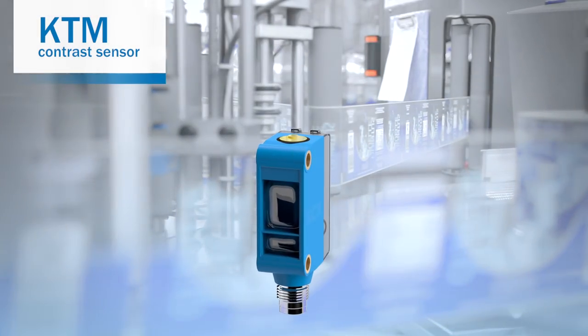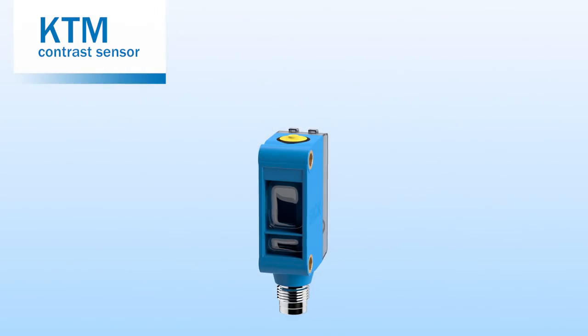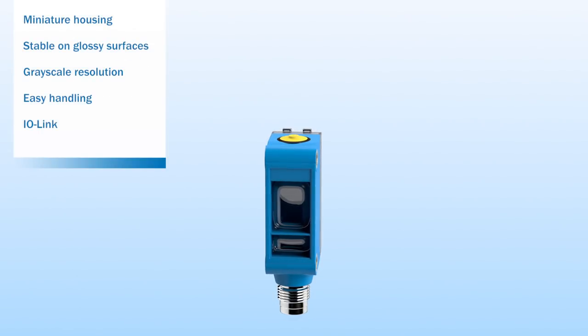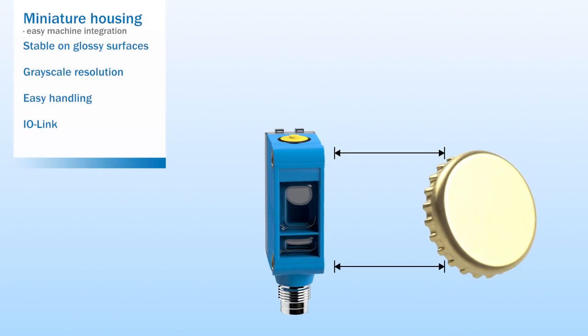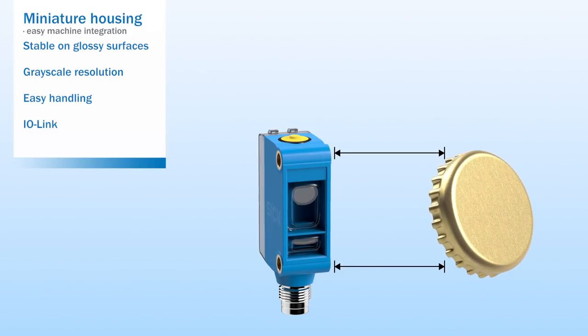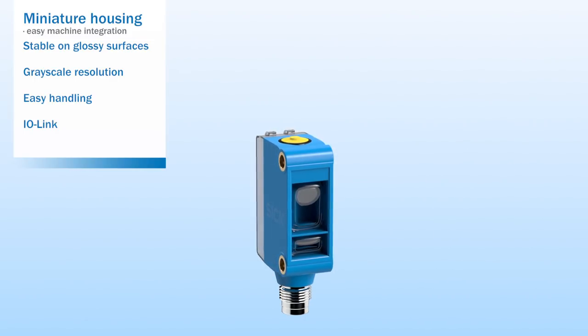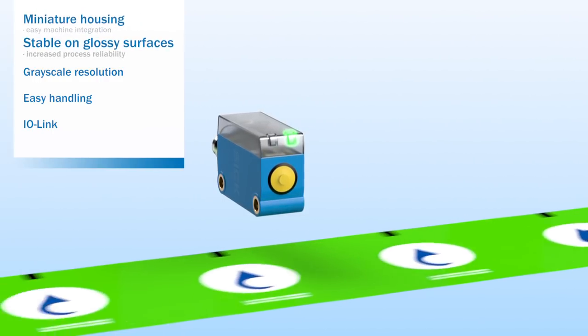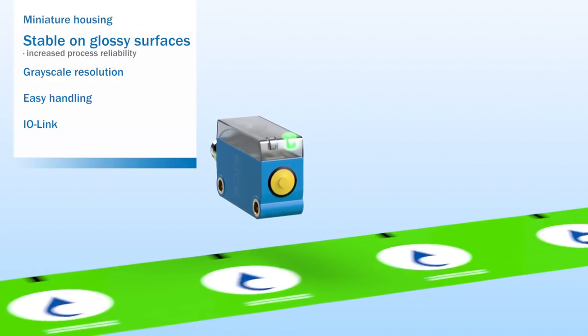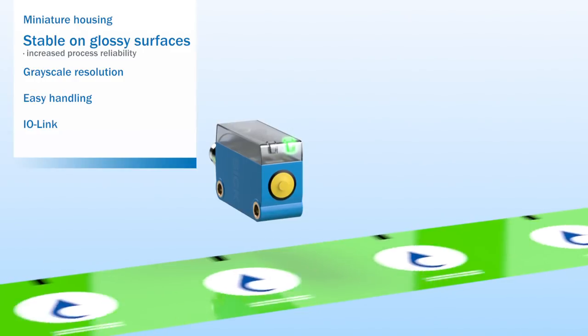The KTM contrast sensor combines a number of advantages and innovations. Its compact design makes for easy mounting, even in inaccessible locations where space is at a premium. A stable switching signal on reflective materials is assured by excellent stability on glossy surfaces.